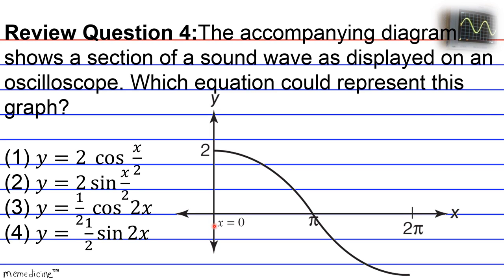When x equals 0, we have an amplitude equivalent to 2. The general equation for a cosine wave is: y equals |a| times the cosine of bx, where |a| is the amplitude and |b| is the frequency — basically the number of complete cycles in the interval from 0 to 2π.